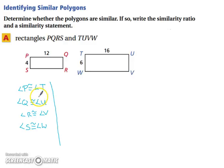The next piece was to see if the sides are proportional. So, let's look at PQ over TU, which is 12 over 16, which gives us 3 fourths. And then we have PS over TW, which is 4 over 6, which reduces to 2 thirds.